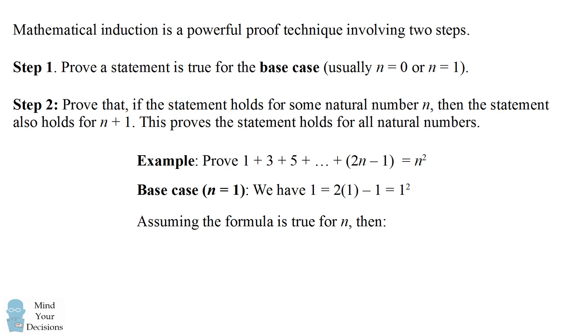We now assume the formula is true for n, and then we want to show that it is also true for n plus 1, the next odd number, which will be 2 larger, which will then be 2n plus 1. How can we prove this formula will also have the same form?